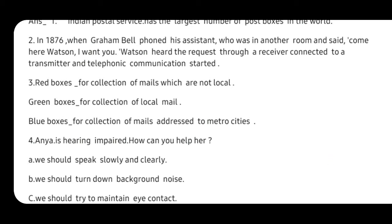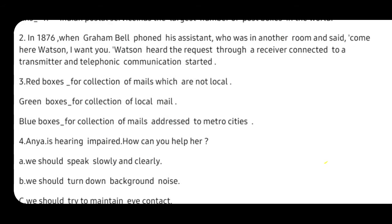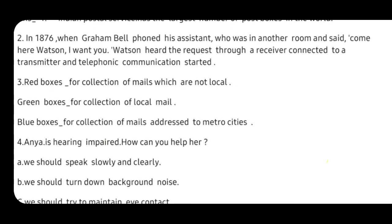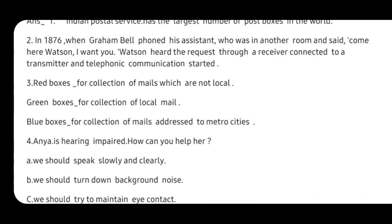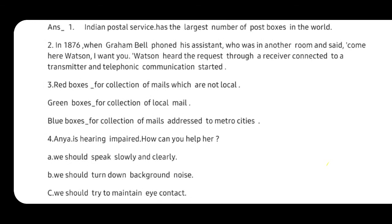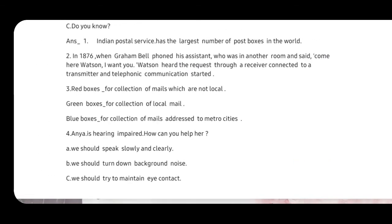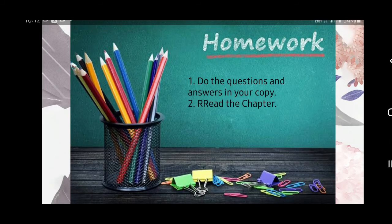Number three: Red boxes are for collection of mail which is not local; green boxes are for collection of local mail; and blue boxes are for collection of mail addressed to metro cities. Number four: Anya is hearing impaired — how can you help her? A: speak slowly and clearly; B: turn down background noise; C: try to maintain eye contact.